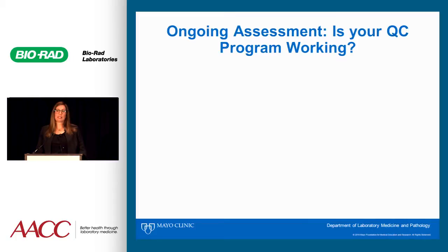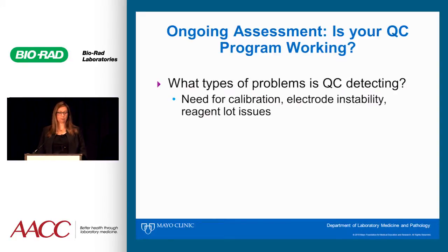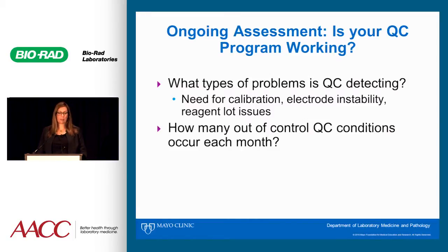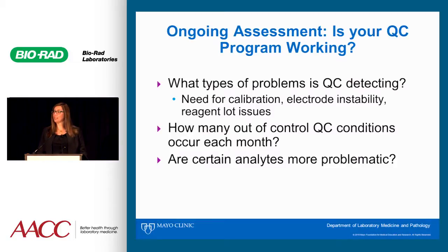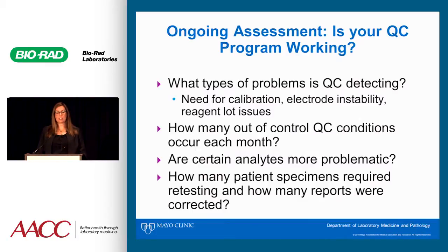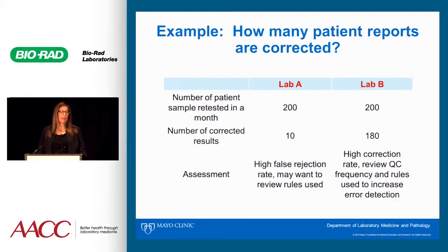The next important phase to consider is ongoing assessment — asking whether your QC program is working. What types of problems is QC detecting? Commonly it's the need for calibration, changing an electrode, or a reagent lot issue. Also ask how many out-of-control QC conditions occur each month, whether certain analytes are more problematic, and how many patient specimens required retesting versus how many reports were corrected. As a generic example: Lab A and Lab B both had to retest 200 patient specimens in a month due to out-of-control conditions.